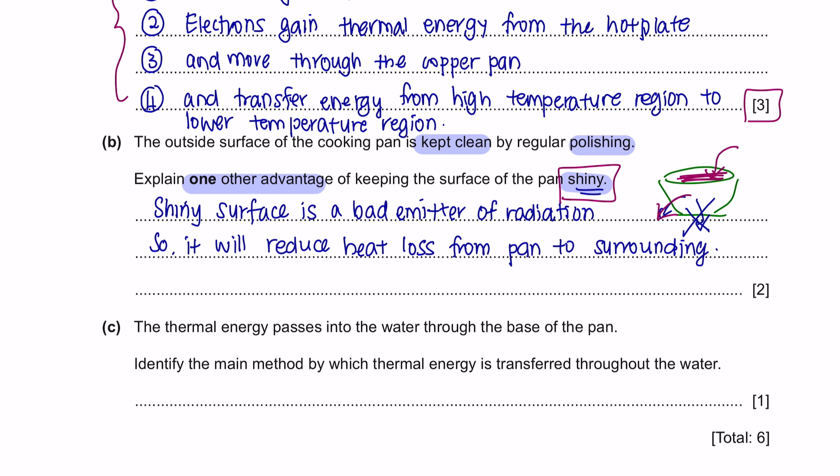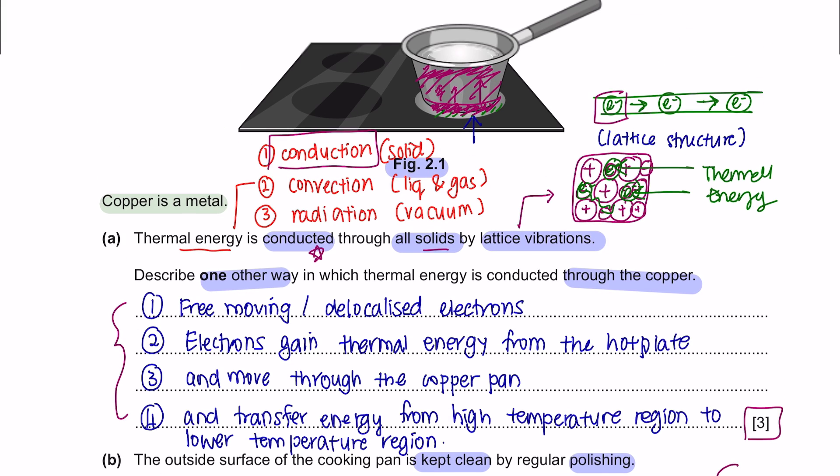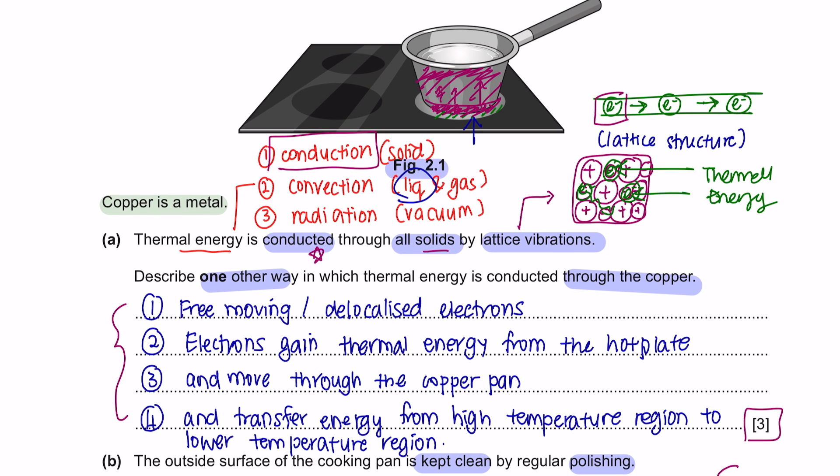Question C. The thermal energy passes into the water through the base of the pan. Identify the main method by which thermal energy is transferred throughout the water. So, as mentioned earlier, throughout liquid, which is water, the mode of transfer is convection.